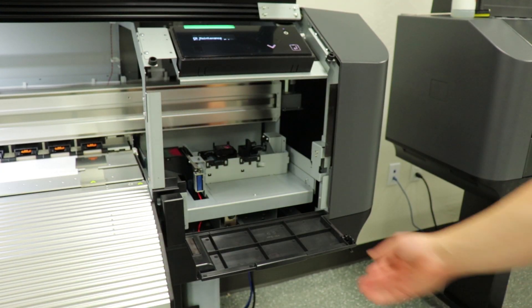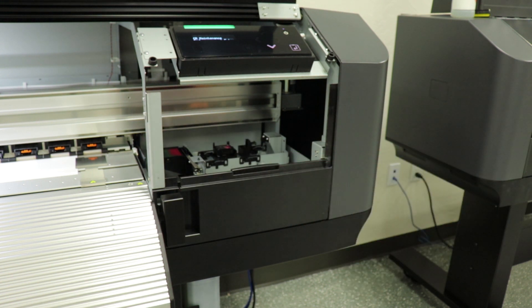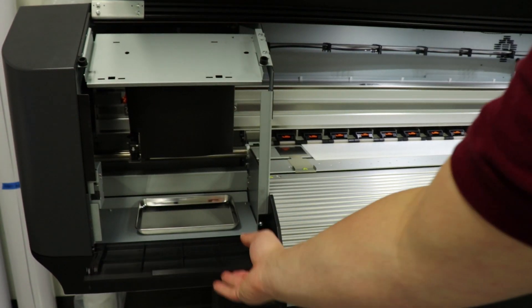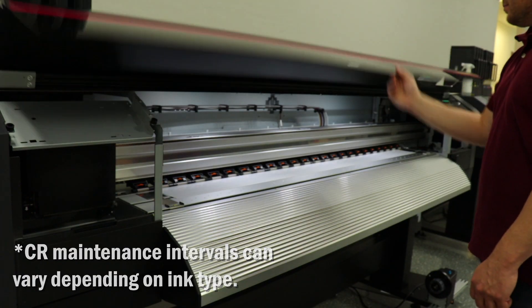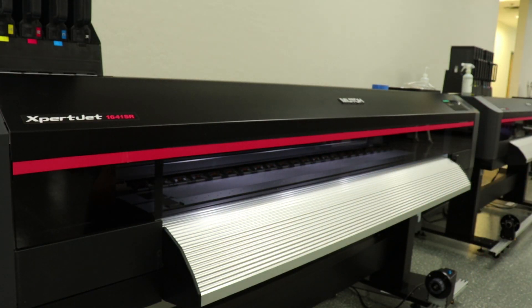Let's go ahead and close all of our covers. We have pretty much completed most of our CR maintenance. For eco-solvent machines, we recommend to perform CR maintenance two to three times a week if you're an average print shop, but you may want to clean your printer every day if you're in a high production environment.